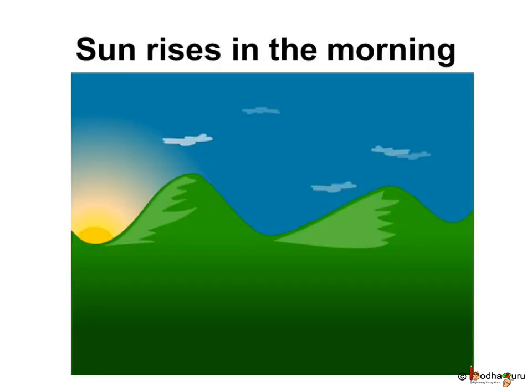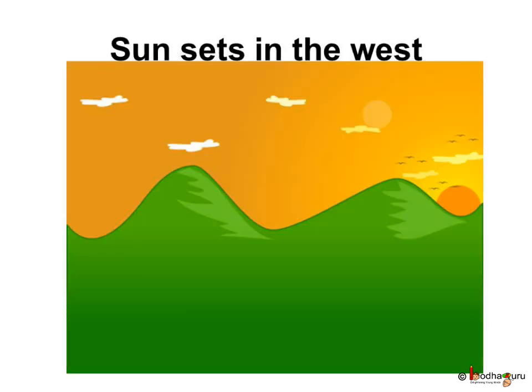So what is daytime or nighttime? We know the sun rises in the east. Slowly the sunlight fills the sky with bright yellow light — we call it morning. And then when the sun sets in the west, we call it evening.